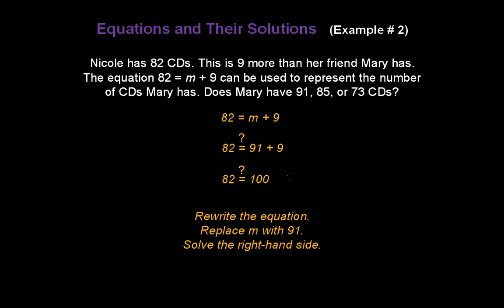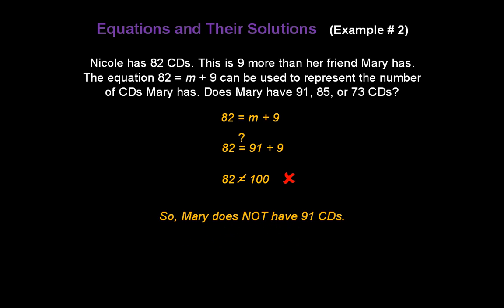Does 82 equal 100? Obviously not. 82 does not equal 100. So we know Mary does not have 91 CDs.